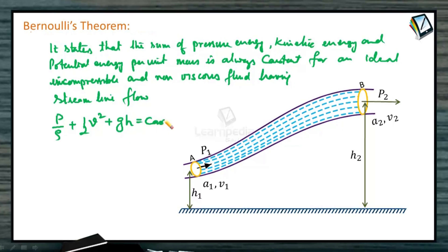(gH) must be constant. So Bernoulli's theorem states that the sum of pressure energy, kinetic energy, and potential energy per unit mass is always constant for an ideal, incompressible, and non-viscous fluid flowing in streamline motion. So P/ρ + ½V² + gH must equal a constant.